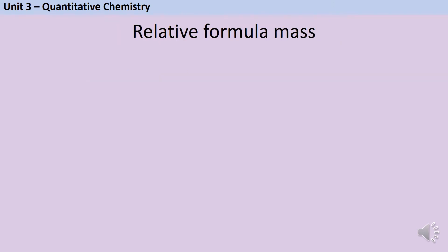Relative atomic mass is a really useful concept, but a lot of the time in chemistry we're not dealing with individual atoms. Relative formula mass is conceptually very similar to relative atomic mass. The only difference is that instead of applying to an individual atom, it applies to something that has a formula — so that could be a compound or a molecule that contains atoms of the same type. To work out the relative formula mass, you just need to add up the relative atomic masses of all of the atoms in the formula.